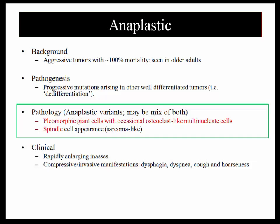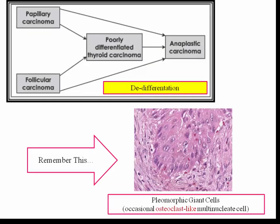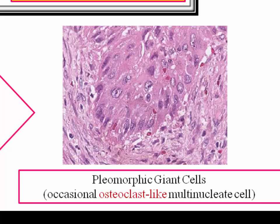The tumor is thought to devolve from more benign malignancies such as papillary or follicular. Two types and phrases to be familiar with: pleomorphic giant cells with occasional osteoclast-like multinucleate giant cells, and spindle cells, which are sarcoma-like. Be familiar with these descriptors so you don't pick the wrong answer on a papillary carcinoma question. This slide includes a graphic representation of de-differentiation in developing anaplastic carcinoma, along with an H&E representation of that pleomorphic giant cell.